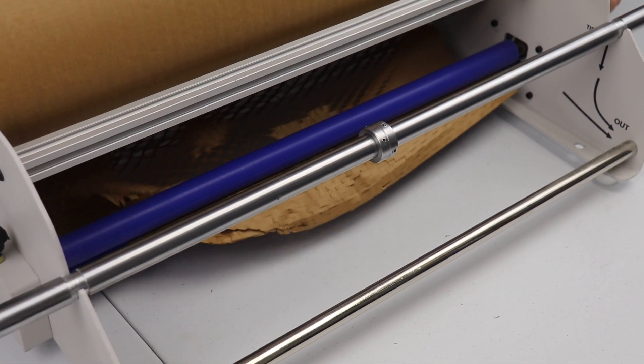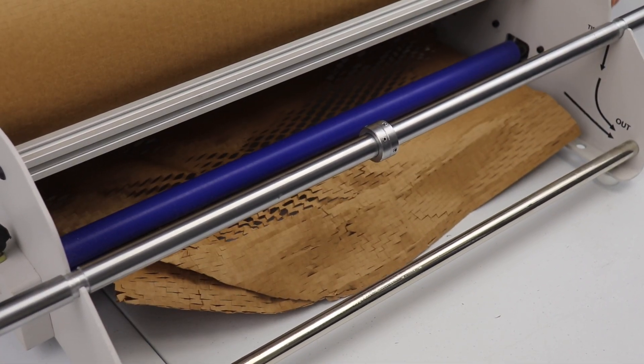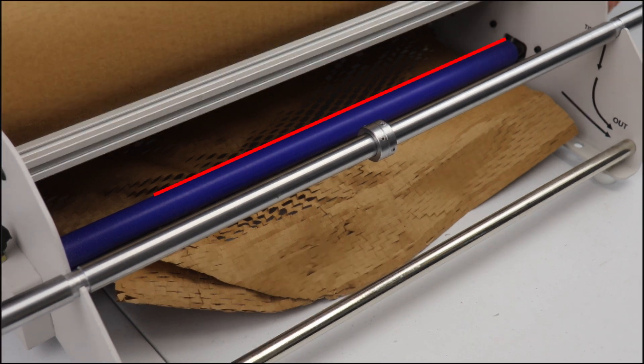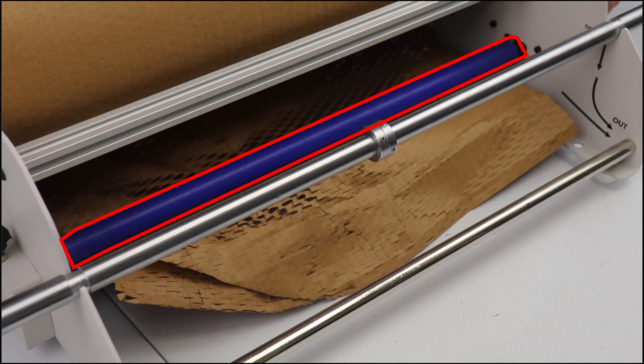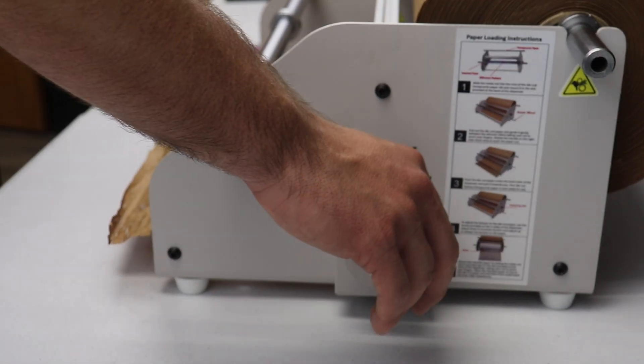Step 4. Begin feeding the roll into the roller mechanism from the back as shown here. Once started, use the roller wheel on the side of the dispenser to guide the paper through.